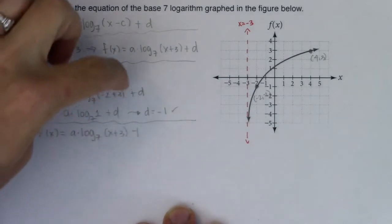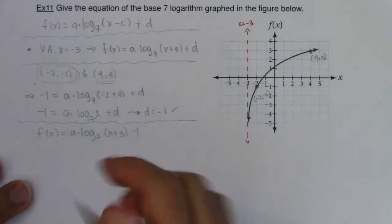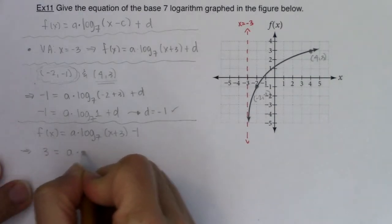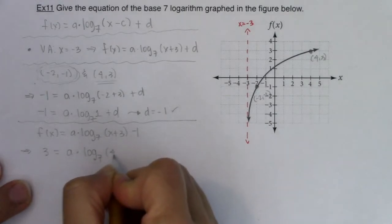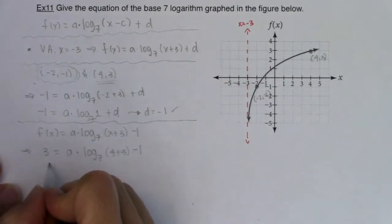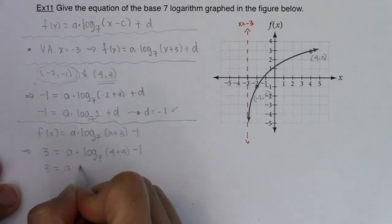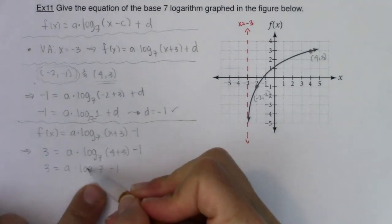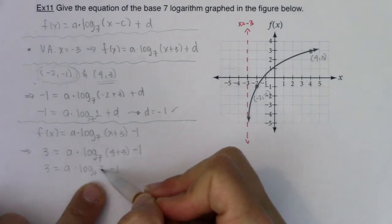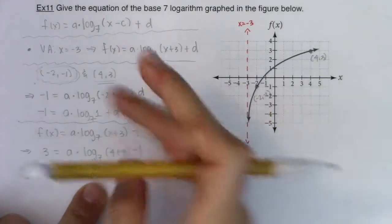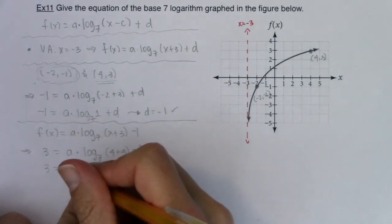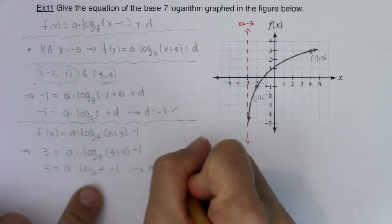So from here, 3 should be equal to A times log base 7 of (4 + 3) minus 1. That's like saying 3 should be equal to A times log base 7 of 7 minus 1. Why am I saying nice? We've talked about this: when the base of your logarithm and the base of your power are the same, the only thing that survives is that exponent, and the exponent on 7 is 1. So log base 7 of 7 is 1, 1 times A is A. So this is saying A minus 1 must equal 3, which tells me A has to equal 4.